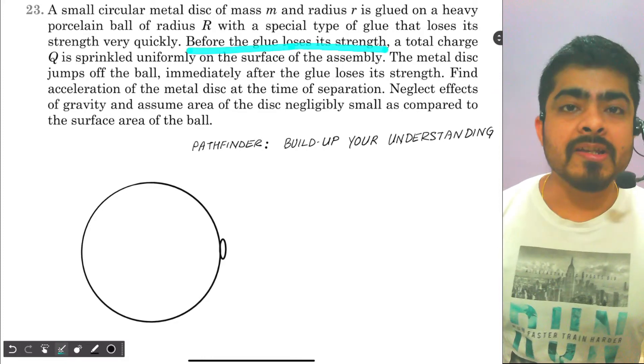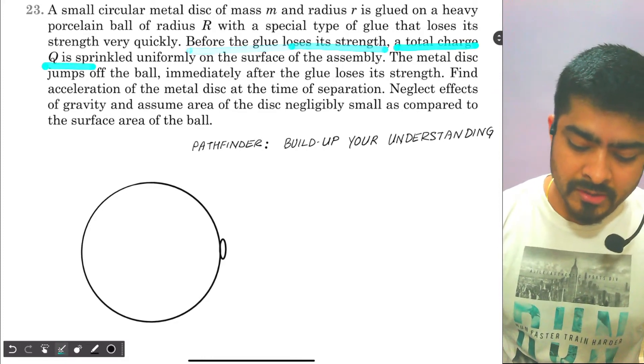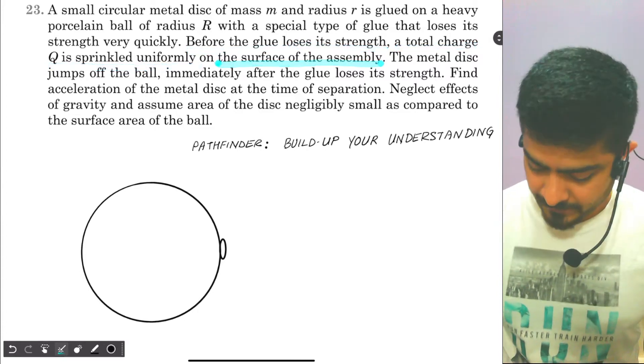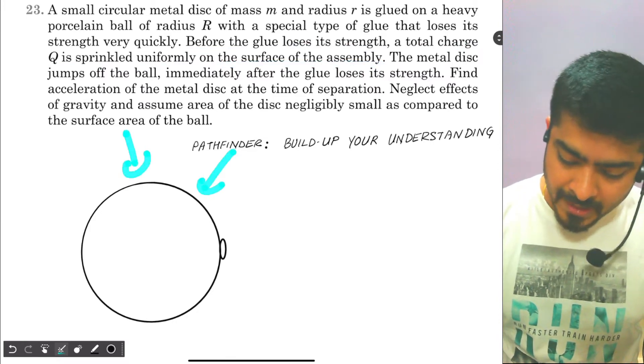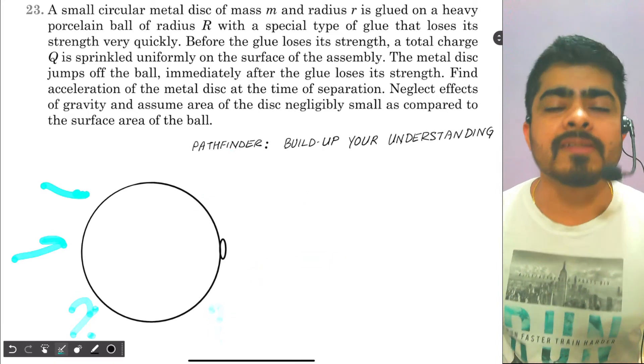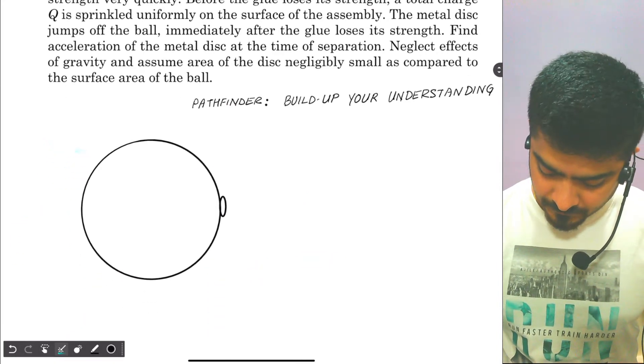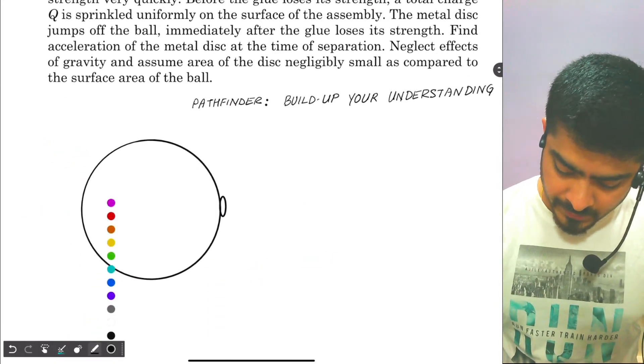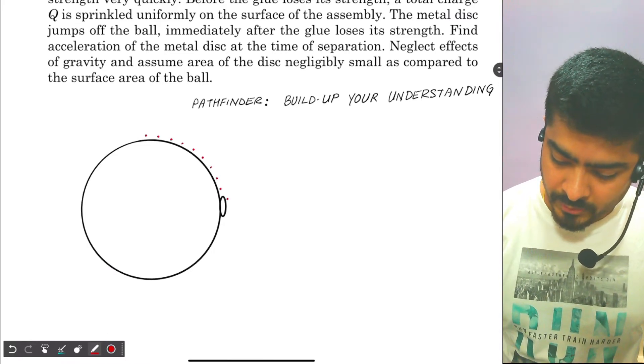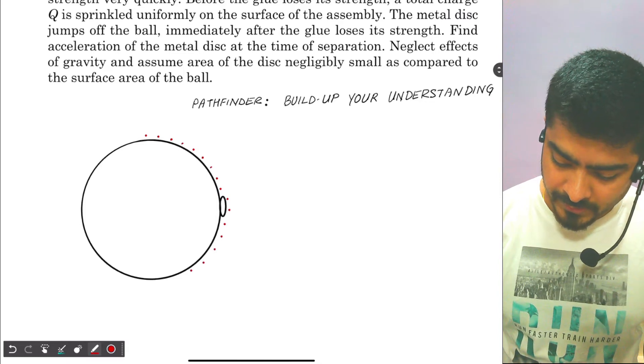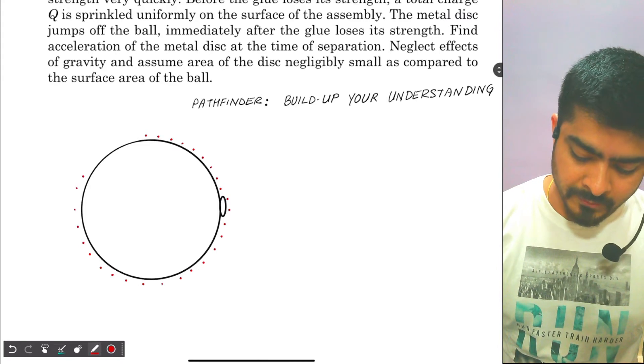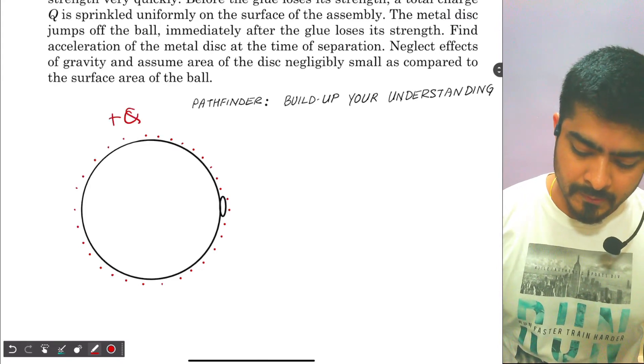Before the glue loses its strength, a total charge Q is sprinkled uniformly on the surface of the assembly. So from all directions we are uniformly sprinkling some charge on the surface of the system. Let's draw the charge over here. I am uniformly distributing a positive charge Q on the surface of the porcelain. This is your uniformly distributed positively charged charge plus Q.